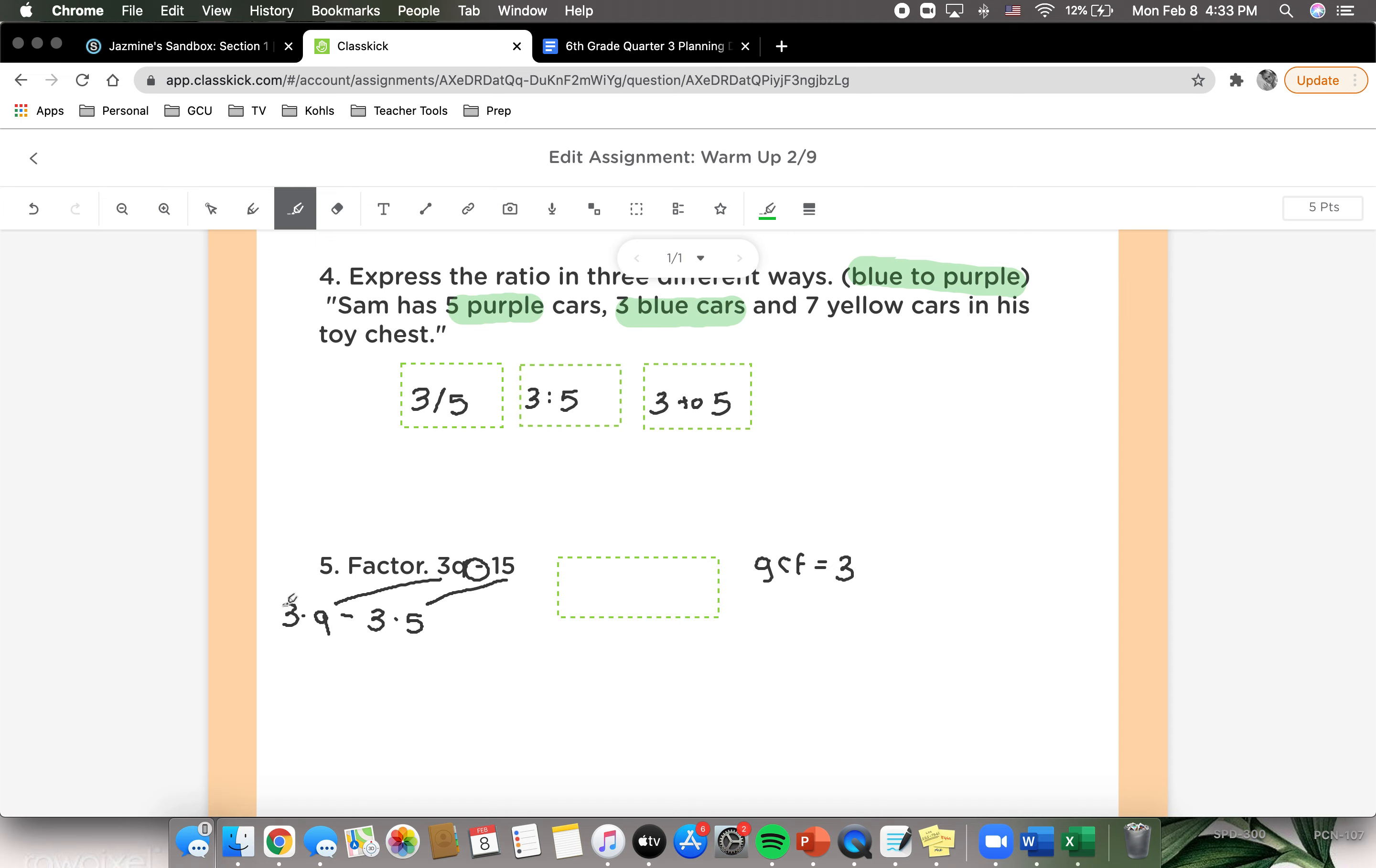Now that we know all of our information, this was our greatest common factor, and all of the rest of the information was what we have found. So whenever we're trying to factor, we always stick our greatest common factor on the outside of our parentheses. And then we have q minus 5 on the inside, so our final answer is 3 times parentheses q minus 5.